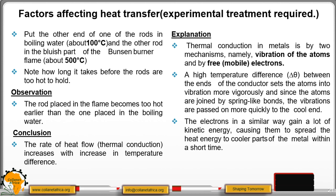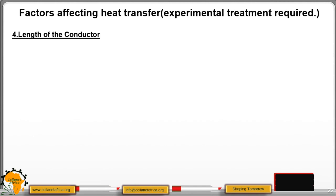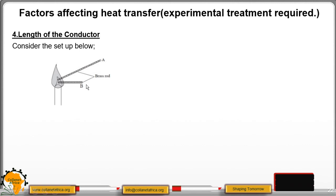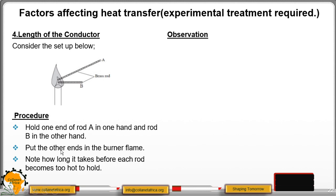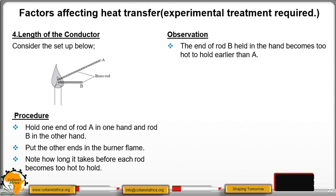Factor four is the length of a conductor. We consider two rods, A and B — A is longer, B is shorter. Procedure: hold one end of rod A in one hand and rod B in the other, then put the other ends in the same burner flame. Observation: the end of rod B becomes hotter earlier than that of rod A.